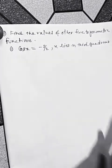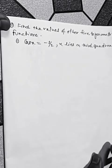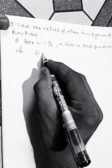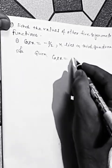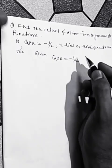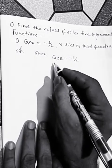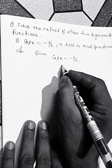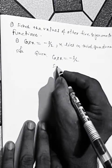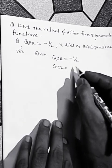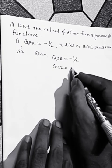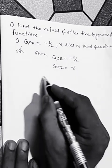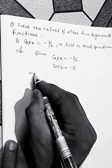Solution: given cos x equals minus half. The inverse of cos x is 1 by cos x, which equals sec x. So we get sec x equal to minus 2, because sec x equals 1 by cos x equals minus 2.